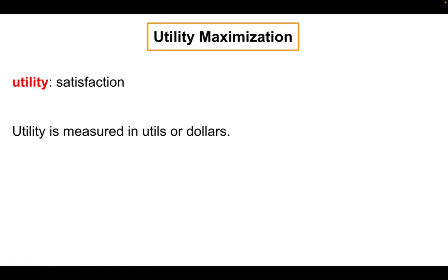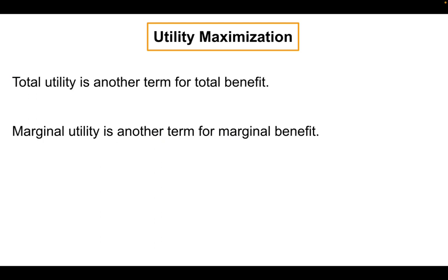Now let's turn our attention to utility, which means satisfaction — when you get utility out of something, you get satisfaction or usefulness out of it. Economists measure utility in two ways: utils, a made-up measurement that simply measures utility, and dollars, just like total benefit. Total utility is actually another term for total benefit, and marginal utility is another term for marginal benefit — another example of different terms meaning the exact same thing.